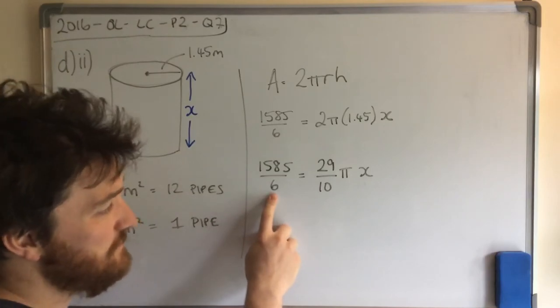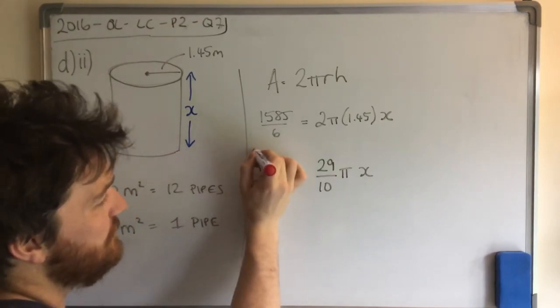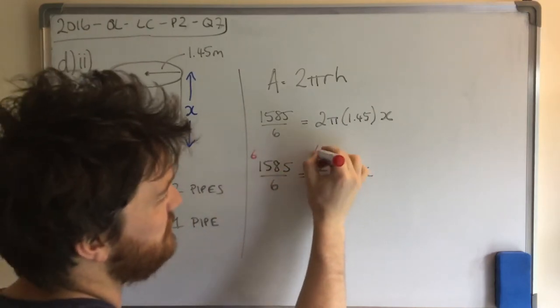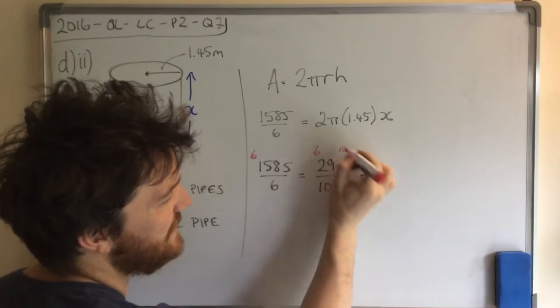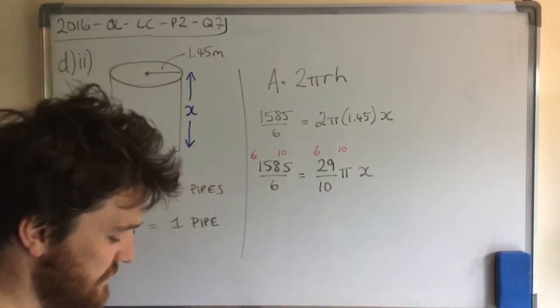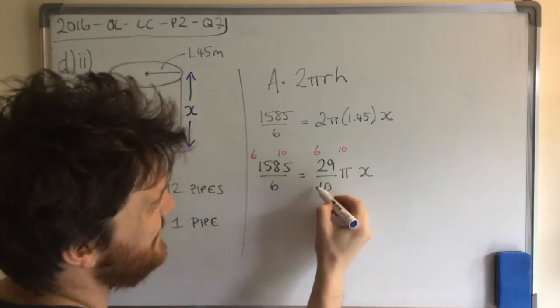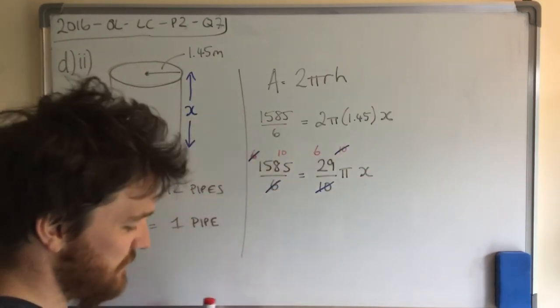So how would I get rid of 6 on the bottom? I would multiply this side by 6. But if I multiply the left by 6, I also have to multiply the right. How do I get rid of 10? Well, I'd multiply this side by 10. But if I multiply the right, I have to multiply the left. So what I'm going to do, just to show this, is these 10s cancel, these 6s cancel.